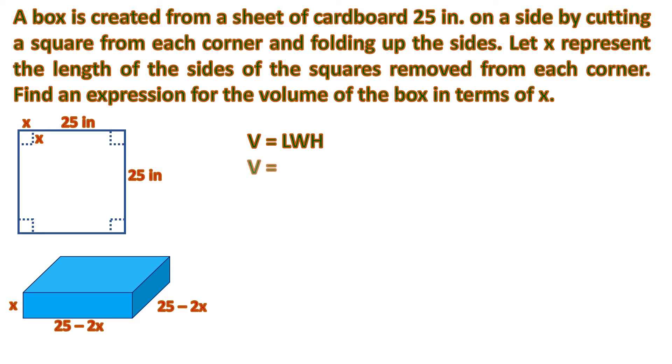Now let's continue. Let us substitute. So the length will be 25 minus 2x as well as the width because it's a square times the height which is x. This 25 minus 2x can be written as the square of 25 minus 2x.